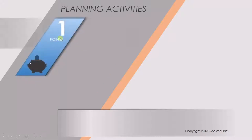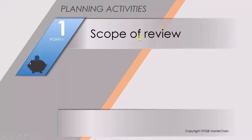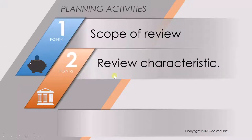The first activity which we have to consider is to define the scope of the review. The second point is to find out the review characteristics — what type of review it's going to be: a formal review or an informal review. So depending upon the priority of that particular feature, we will decide that.